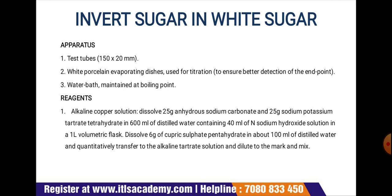The reagent required is alkaline copper solution. To make it, dissolve 25 grams of anhydrous sodium carbonate and 25 grams of sodium potassium tartrate tetrahydrate in 600 ml of distilled water containing 40 ml of normal sodium hydroxide solution in a 1-liter volumetric flask. Dissolve 6 grams of cupric sulfate pentahydrate in about 100 ml of distilled water, quantitatively transfer to the alkaline tartrate solution, dilute to the mark, and mix. This is how you make the alkaline copper solution.